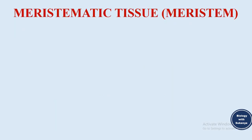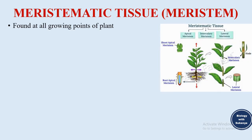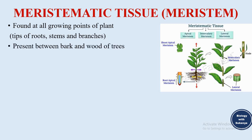Meristematic tissue is also known as meristem. They are found at all growing points of the plant, that is the tips of root, tips of stem and branches. They are also present between bark and wood of trees, resulting in the increase in thickness. Meristematic tissue can also be divided into apical meristem, intercalary meristem and lateral meristem.